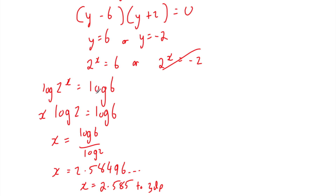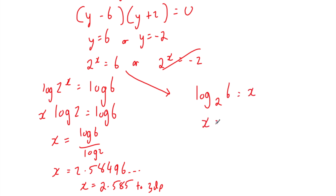I mentioned you could also rewrite this as a logarithm rather than taking logs of both sides. Remember we've got the base, the power, and the answer — so the log to base 2 of the answer gives the power x. Turning that around: x equals log to base 2 of 6. Typing that into our calculator, we get x equals 2.5849..., which is the same answer. So we've solved that equation.